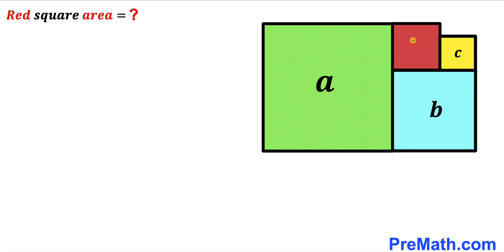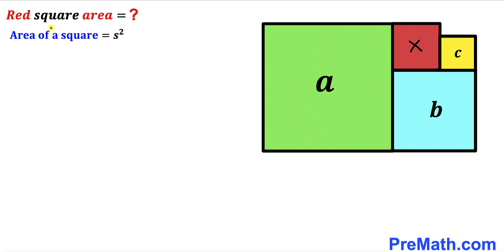Let's focus on the red shaded square and assume its area is x square units. We are going to solve for x in terms of a, b, and c. Since we are dealing with squares, we recall the area formula: area = s², where s represents the side length. If the area is A, then A = s².